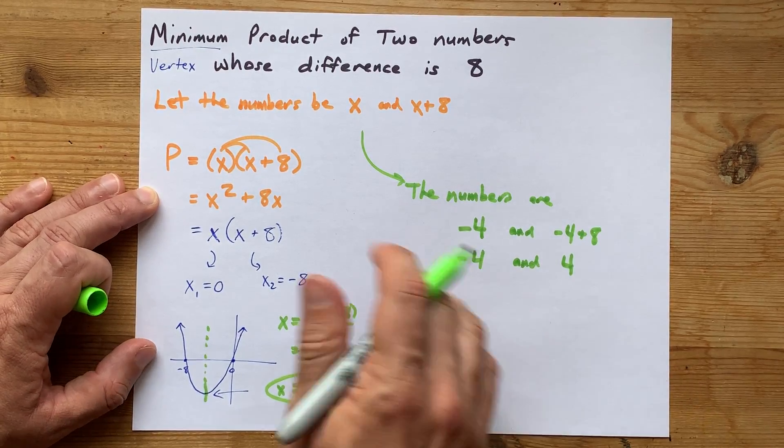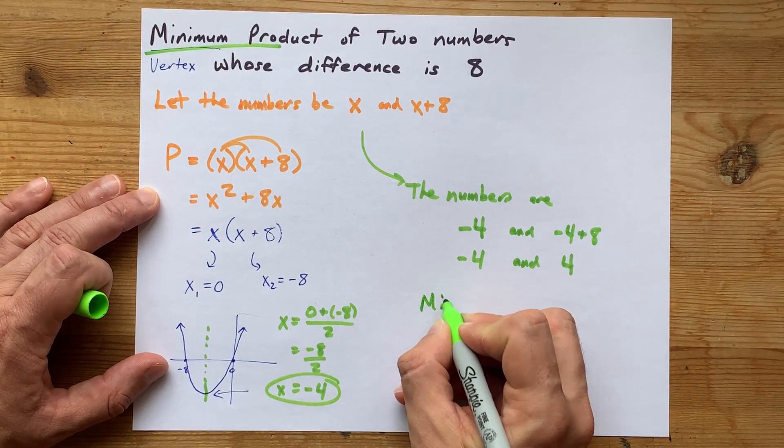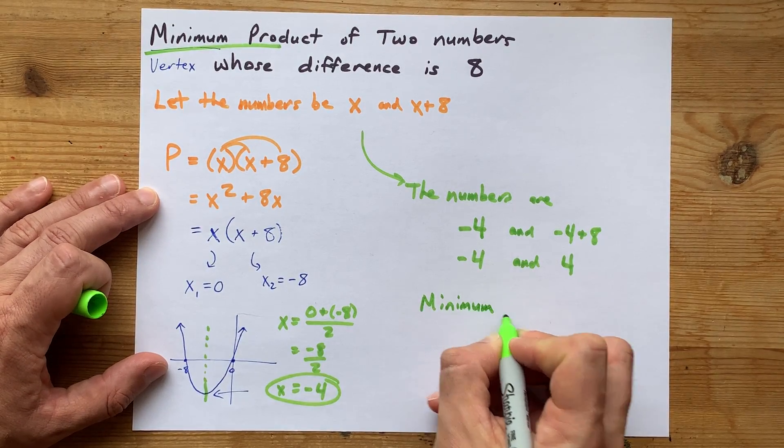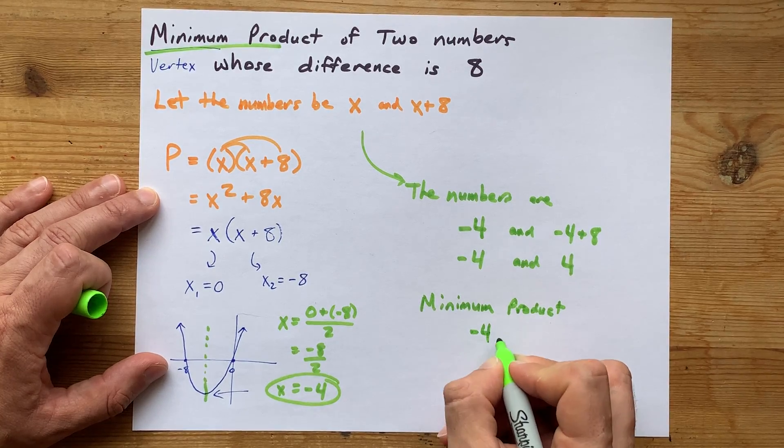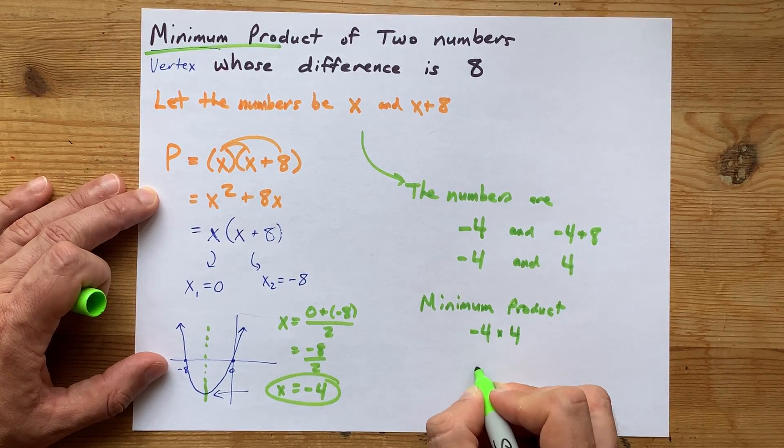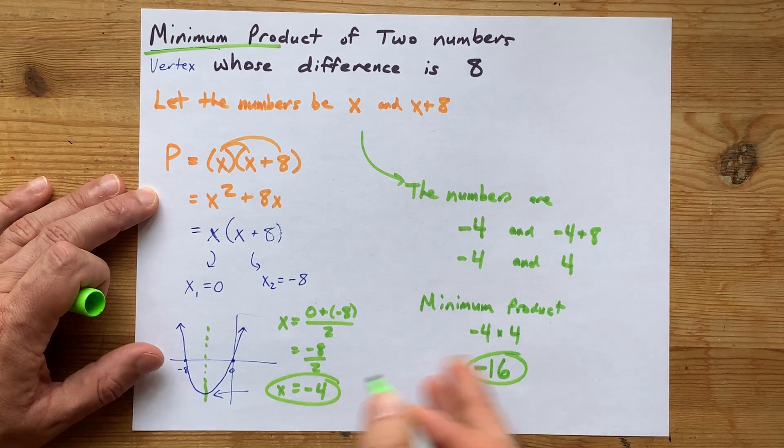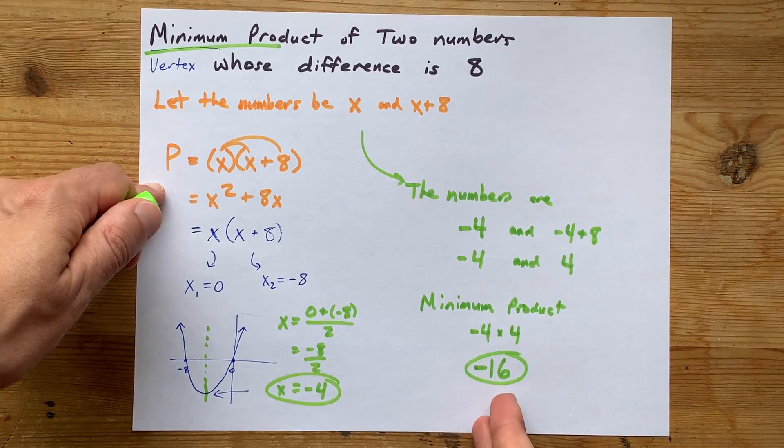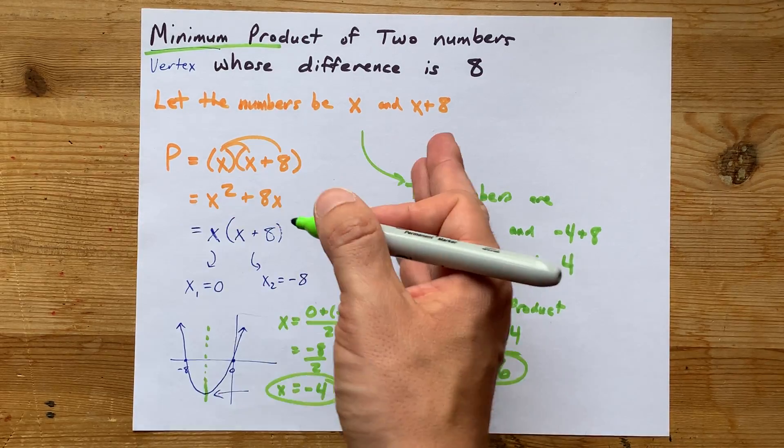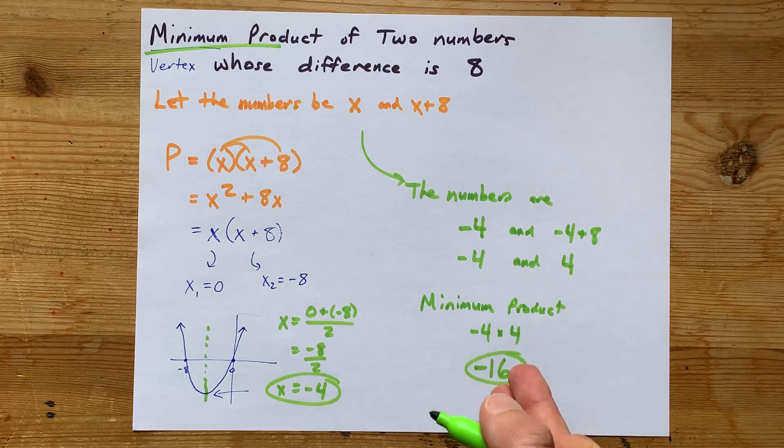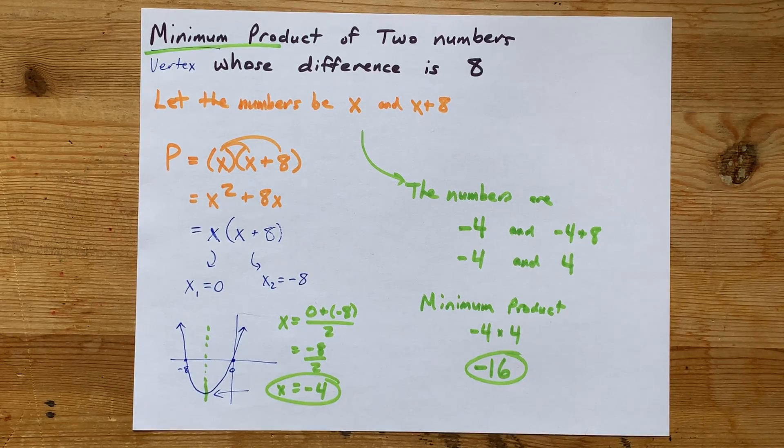And we are asked for the minimum product. Well, that means that the minimum product itself is negative 4 times 4, which is negative 16. Cool. The smallest that product can get is negative 16. If you picked any other two numbers that differed by 8, they're going to multiply to something bigger than negative 16.